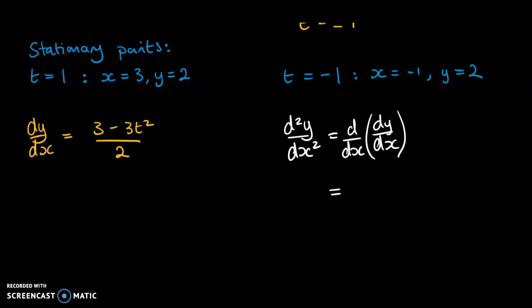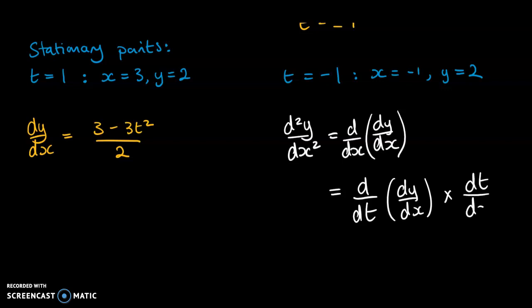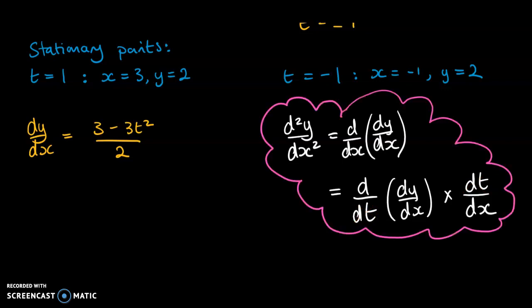So the second derivative is the same as differentiating dy/dx with respect to t and then multiplying by dt/dx. This is applying the chain rule again — the dt's cancel out and you're left with d/dx. So the important step is: differentiate your first derivative with respect to t, then multiply by dt/dx.